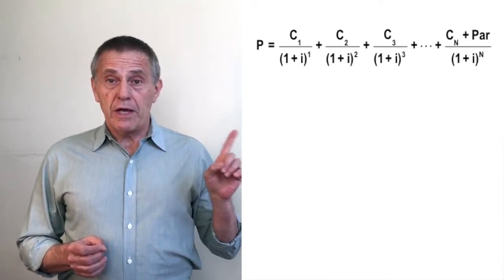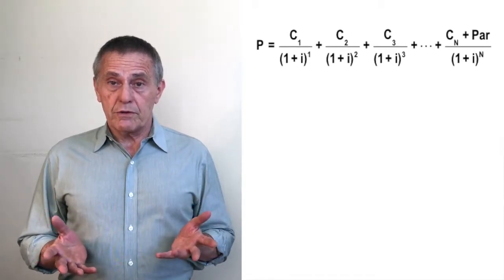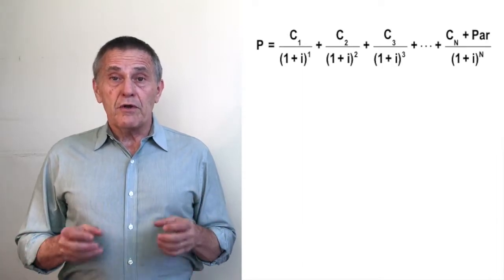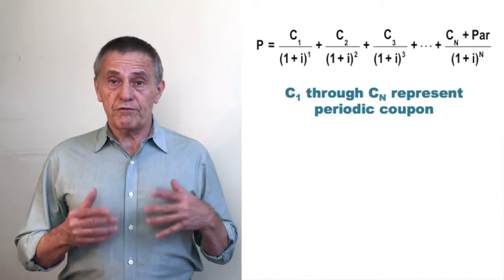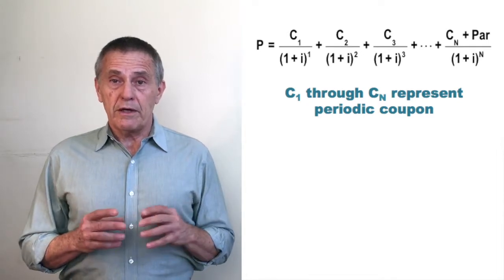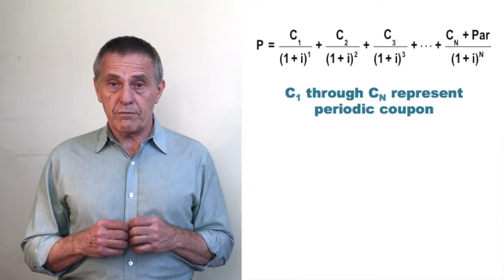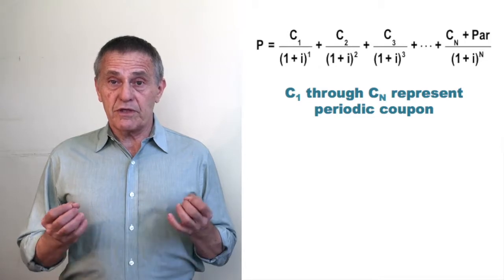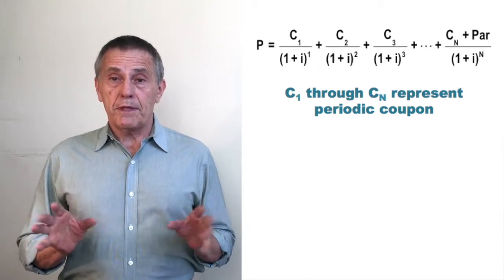The numerators on the right-hand side of the equation represent the contractual cash flows. For all of the periods prior to maturity, those cash flows are simply the fixed coupon. So C sub 1 reflects the first due coupon going forward in time, C sub 2 the second due coupon and so forth. And at maturity, of course, the cash flow due the investor is the last coupon, C sub n for the nth or final coupon plus the principal amount.